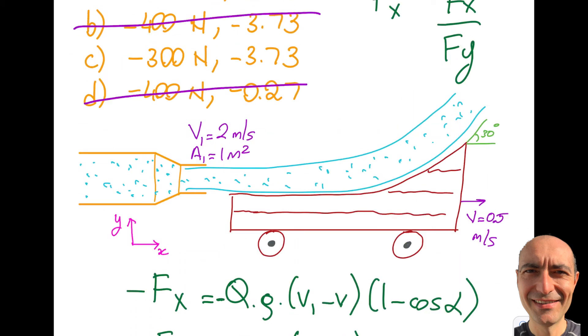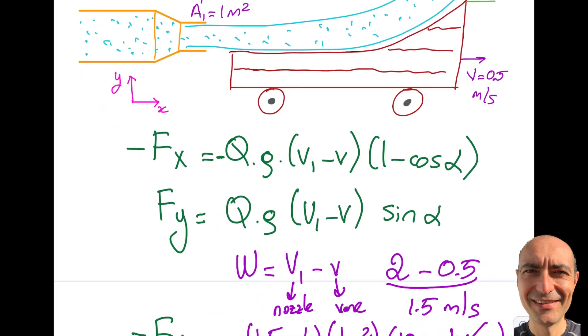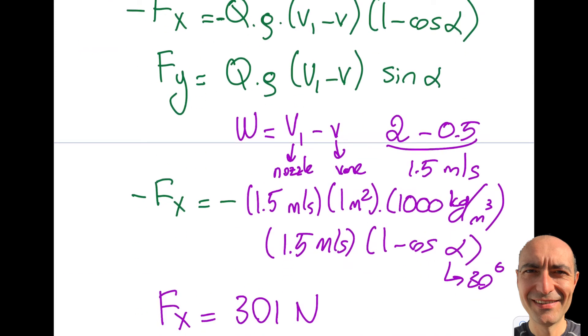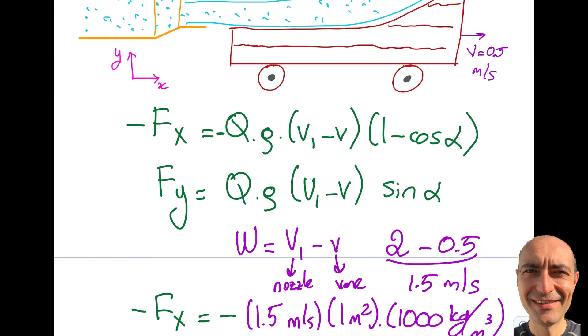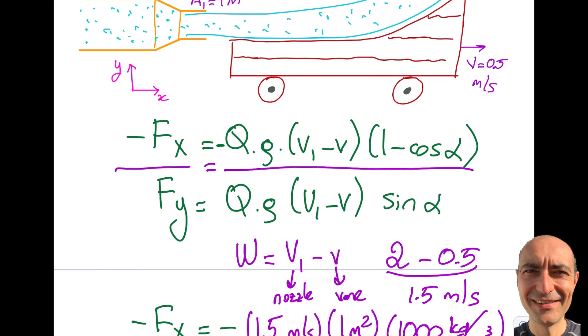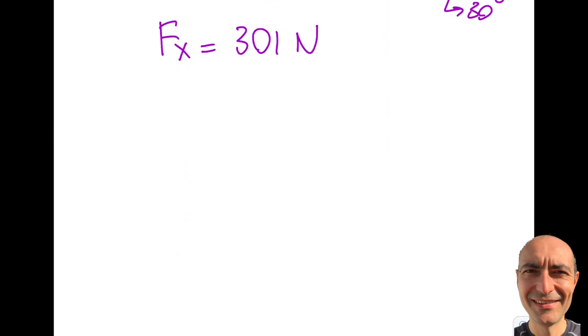Next is finding the ratio Fx/Fy. There are two approaches - they're equivalent. I have ρQ already calculated, and W is calculated. If I divide the equations side by side, Q cancels, ρ cancels, and W (V1-V) cancels. So Fx/Fy equals (1 - cos α) / sin α.